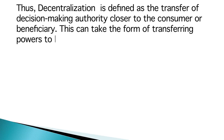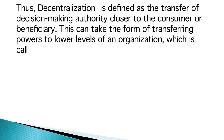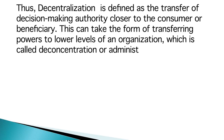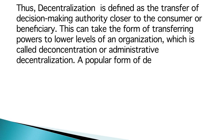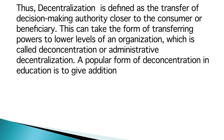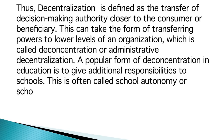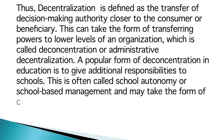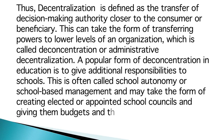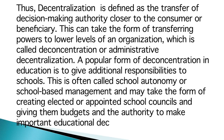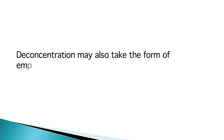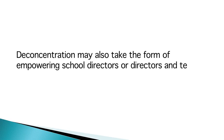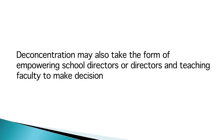This can take the form of transferring powers to lower levels of an organization, which is called deconcentration or administrative decentralization. A popular form of deconcentration in education is to give additional responsibilities to schools. This is often called school autonomy or school-based management, and may take the form of creating elected or appointed school councils and giving them budget and the authority to make important educational decisions. Deconcentration may also take the form of empowering school directors and teaching faculty to make decisions within the school.